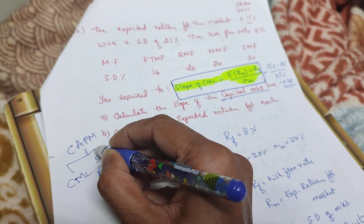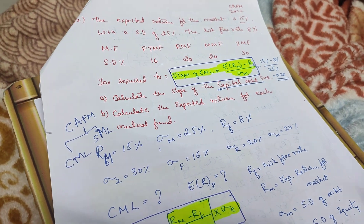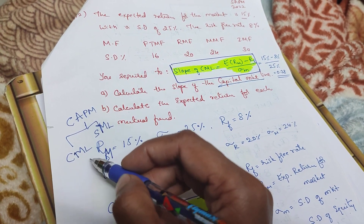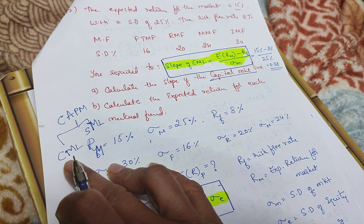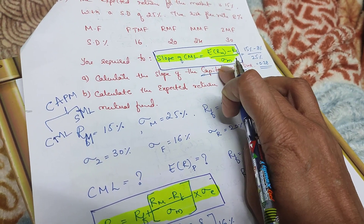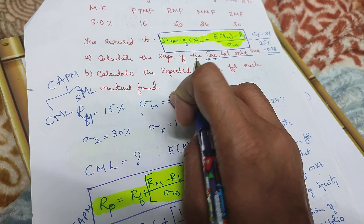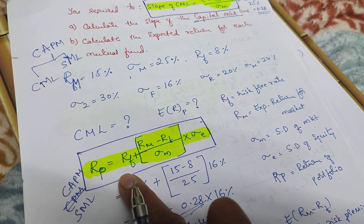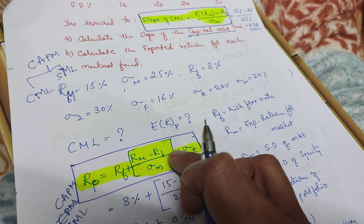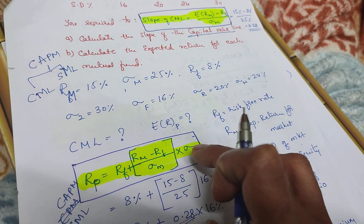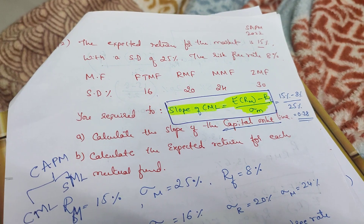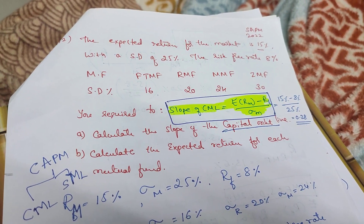This covers the security market line and capital market line concepts. The slope and the CML formula with the SML formula — RF plus (RM minus RF) divided by standard deviation of M, into standard deviation of E — this formula is marked for your reference. I hope you enjoyed this video. All the best.